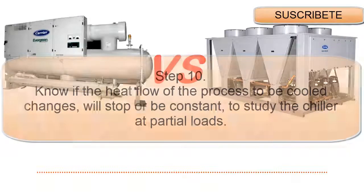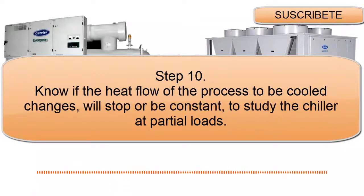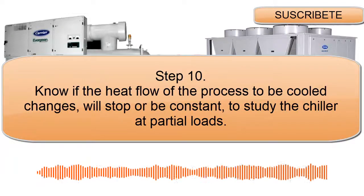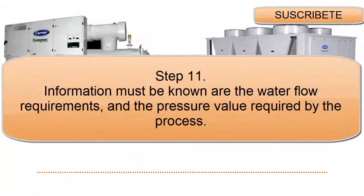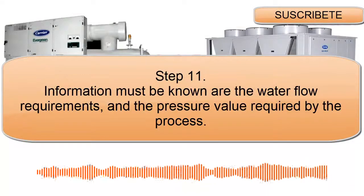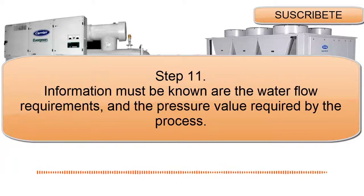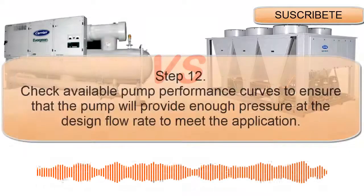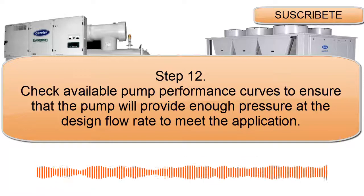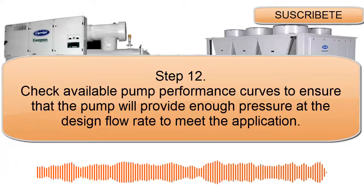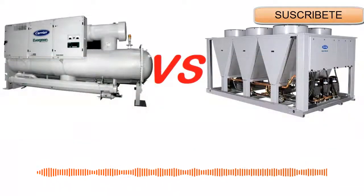Step 10: Know if the heat flow of the process to be cooled changes, will stop, or be constant, to study the chiller at partial loads. Step 11: The water flow requirements and the pressure value required by the process must be known. Step 12: Check available pump performance curves to ensure that the pump will provide enough pressure at the design flow rate to meet the application.